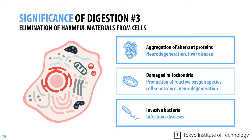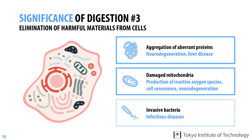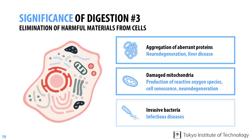Moreover, in mammals, some bacteria and viruses invade cells and cause infectious diseases. Autophagy can eliminate large and harmful materials such as the examples we just thought about. Autophagy therefore plays an important role in protecting us from cellular damage that results in aging and diseases.